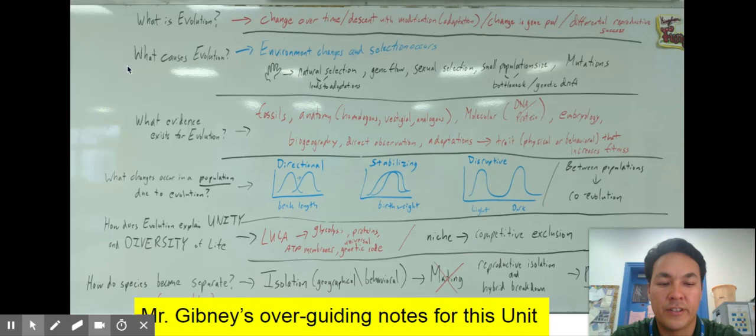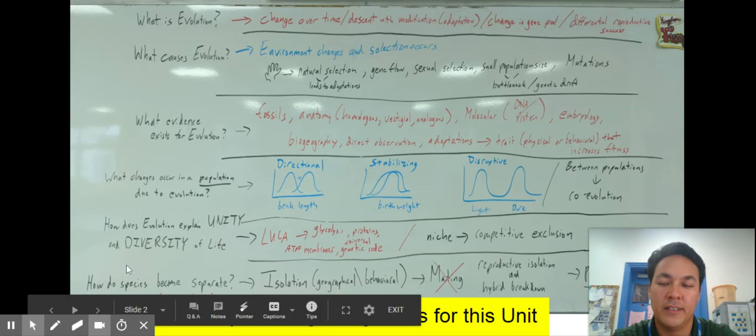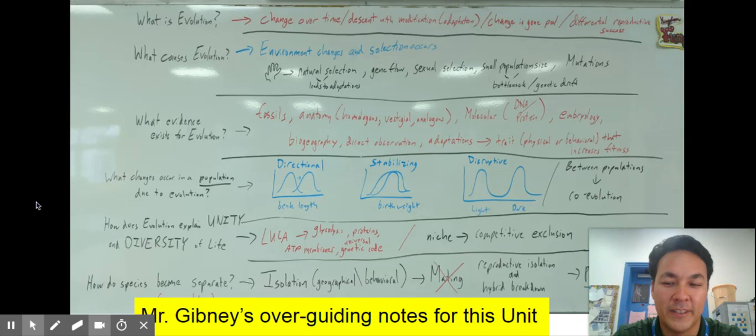And so we also then dove back into you know the start of time and said well where did life come from? How does evolution explain both the unity of life on earth and the beautiful diversity of life on earth? This question to me is just astounding in its beauty and its grandeur. We went over to Charles Darwin quote and I played you some Attenborough stuff and hopefully you enjoyed it.